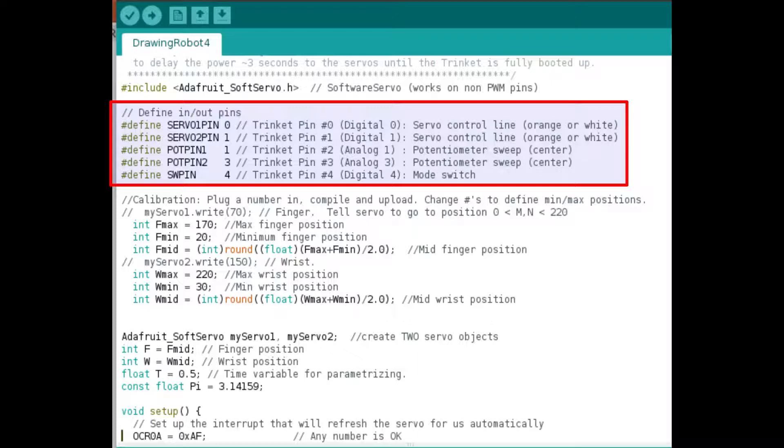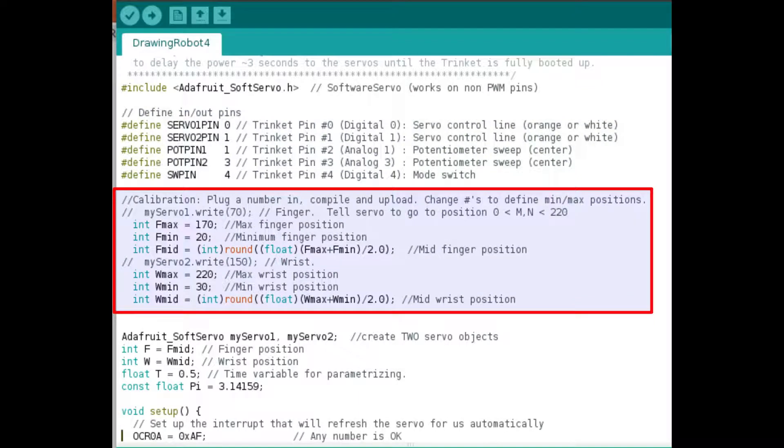The funny thing is the numbering for the analog inputs is different than the pin numbers for analog one. The next section here is the calibration. This is where you set the max and the min for your finger motion, which is Fmin, Fmax, and the wrist motion, Wmin, Wmax.